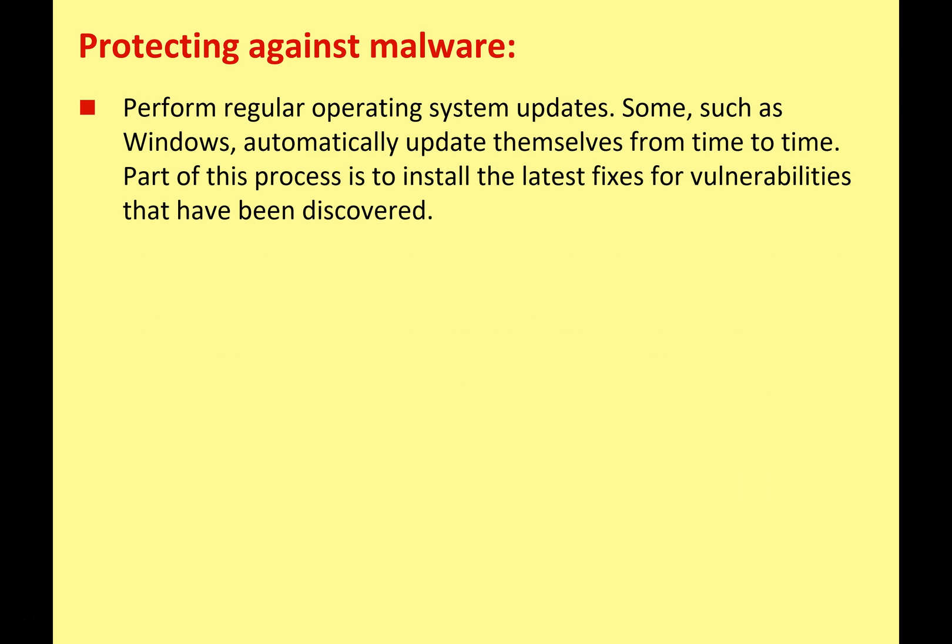It's very important to perform regular operating system updates. Most operating systems, for example Windows or macOS, will automatically update themselves from time to time. This is really important because part of the update process is installing the latest fixes for vulnerabilities discovered in the operating system. If you've got an older OS that hasn't been updated, there could be security holes that malware could exploit to gain access to your files and install themselves in ways that are very difficult to remove. Always keep your operating system up to date — it's absolutely crucial.